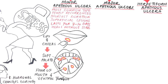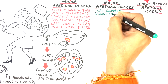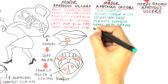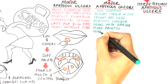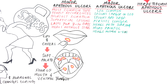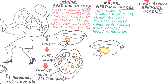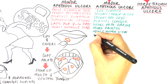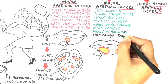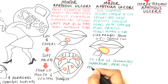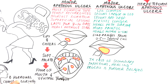Major aphthous ulcers are less common than the minor type. The lesions, as the name suggests, are larger, deeper, and since they are deep, they persist for a longer period, heal with scarring and are more painful. Major aphthous ulcers have the longest duration of all forms and heal in a period of 2 to 6 weeks. They most commonly appear over the lips, though other areas of the mouth might also be affected. The size of the lesion may range between 0.5 cm to several cm, and the extensive lesions might become secondarily infected, further delaying the healing process.